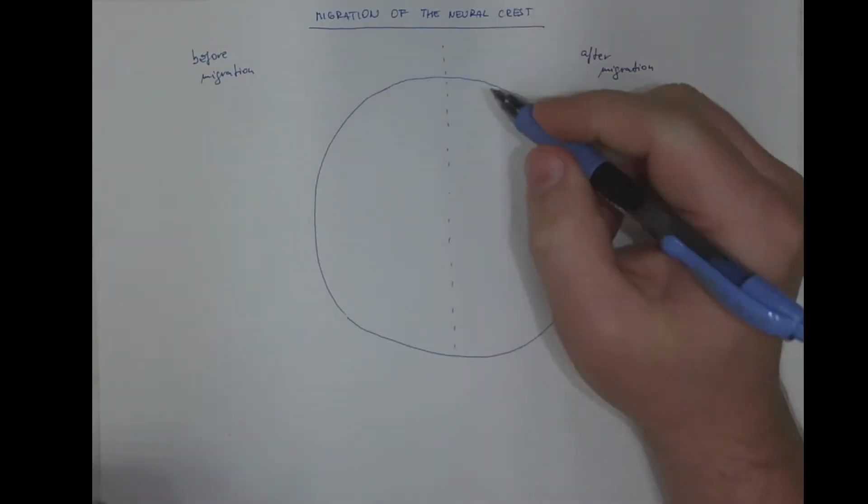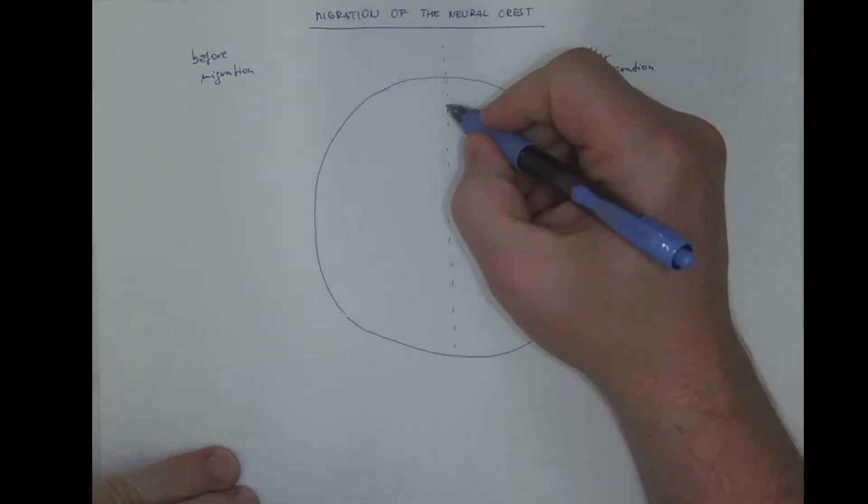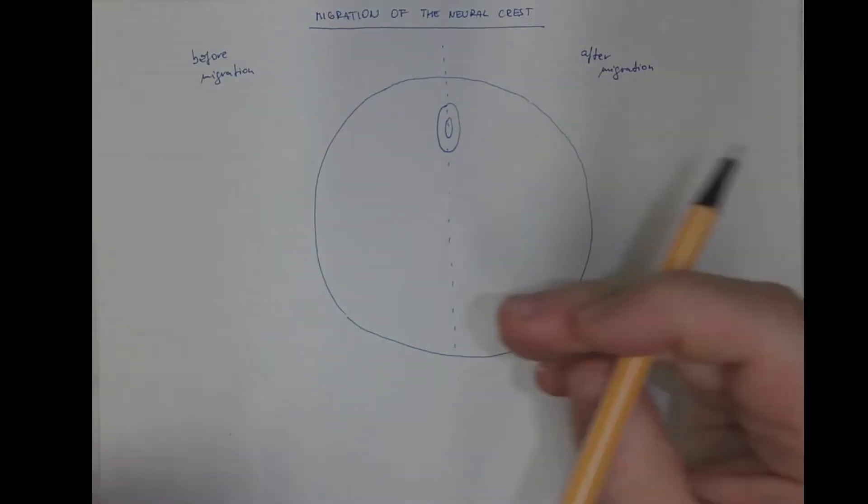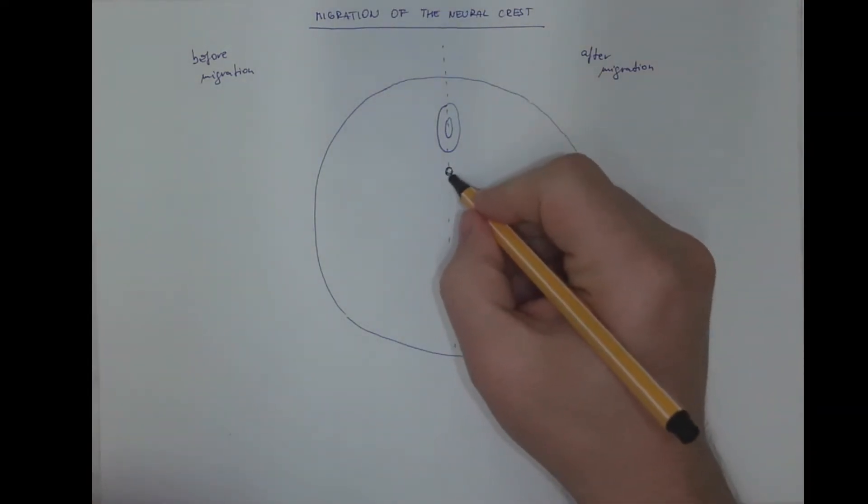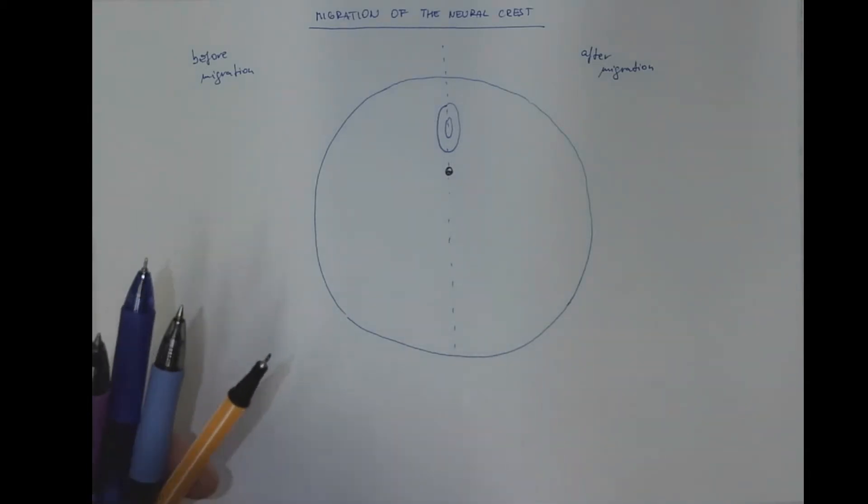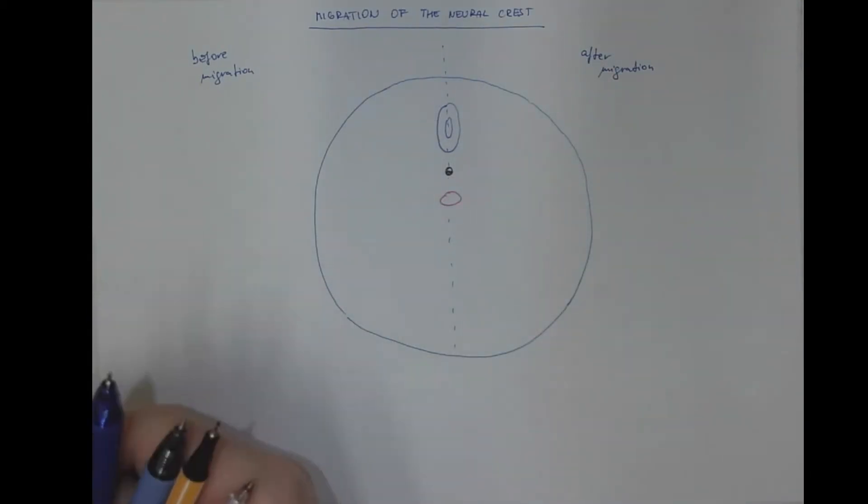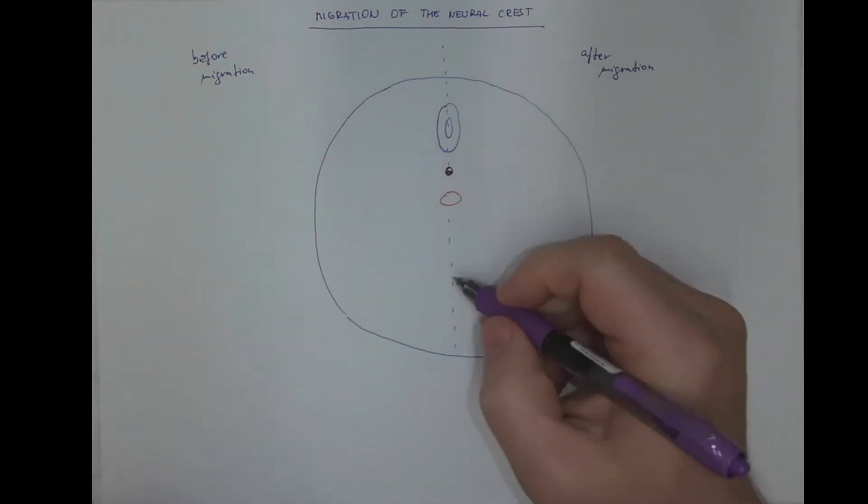So I will include some structures for better orientation. This will be the neural tube, the notochord, the dorsal aorta, and the intestine.